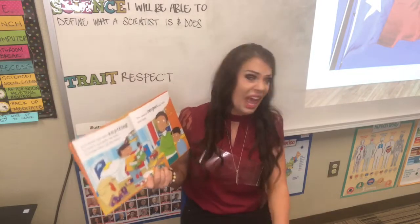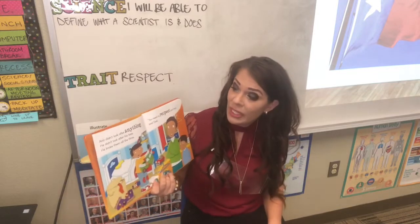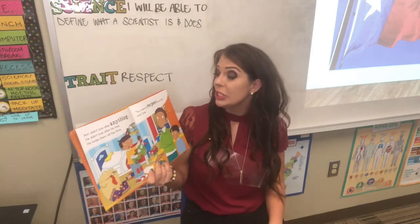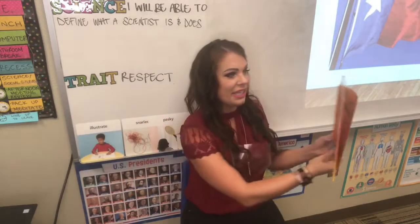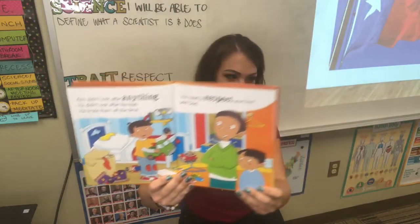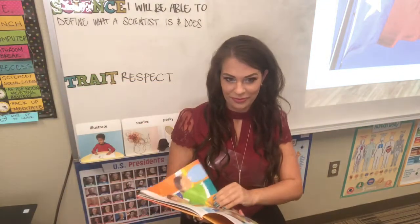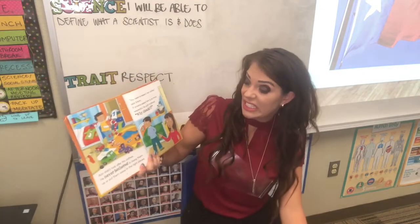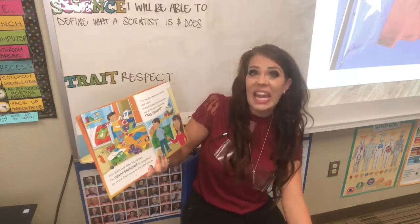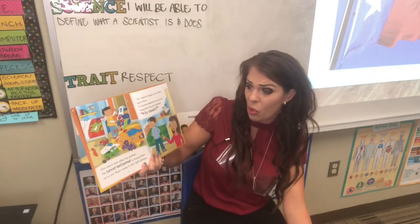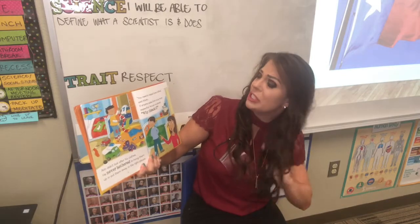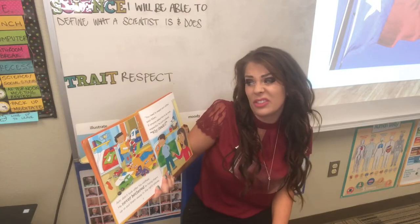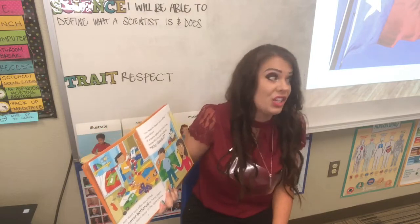Aaron didn't look after anything. He didn't look after his toys — he broke them all the time. 'You need to respect your toys,' said dad. Aaron didn't look after his clothes. He never bothered to hang them up or put them away in the right places. 'You need to respect your clothes,' said mom. If anyone asked him to be more respectful, he just wondered, 'Why should I?'